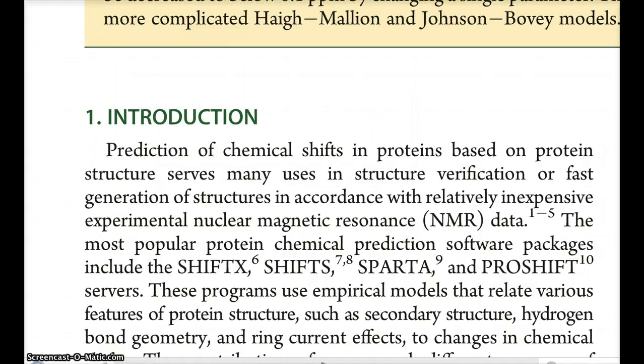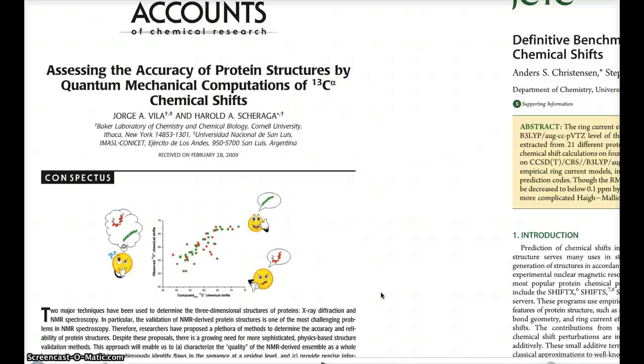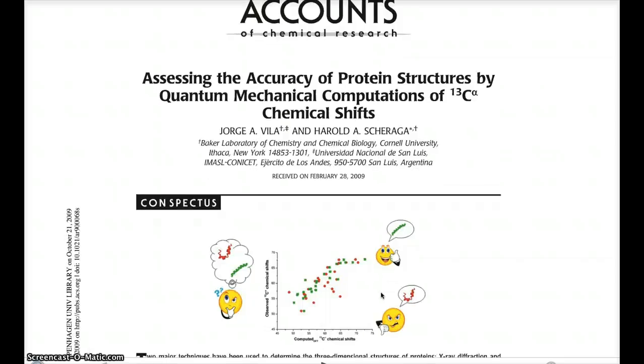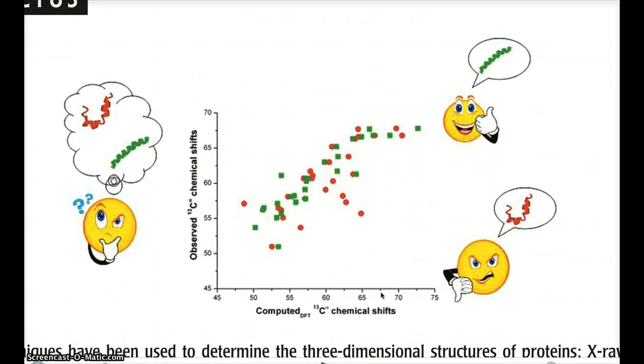There's a lot of programs out there, some of these are listed here, that can take a protein structure and predict the chemical shifts, and there are many uses for that. The one we're most interested in is illustrated here in this very nice paper by Jorge Villa and Harold Scheraga in Accounts of Chemical Research. And what is especially nice about this paper is this figure here. One way to use chemical shifts is to validate protein structures, or essentially fold protein structures.